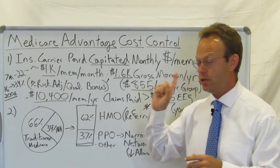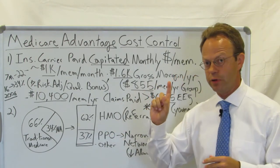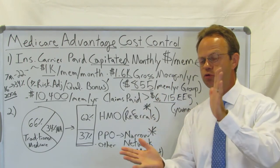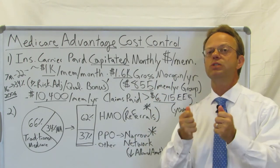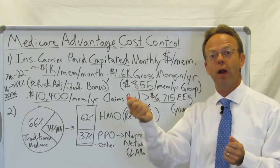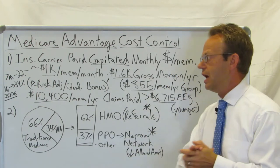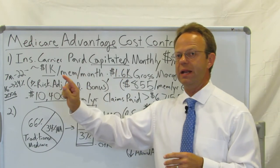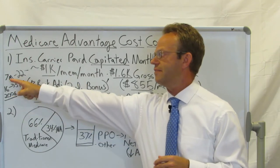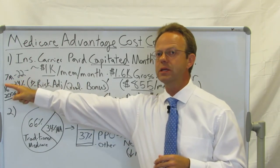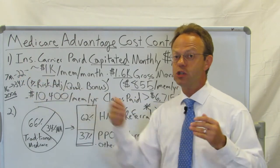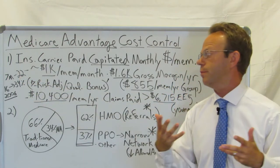Note from a previous video that revenue growth for insurance carriers is much more from government than from private employers. Specifically for Medicare Advantage, from 2006 until today they've increased from 7 million members to 22 million members — that's more than tripled.